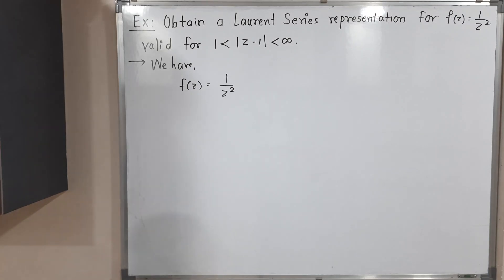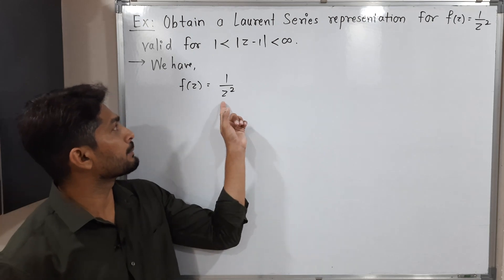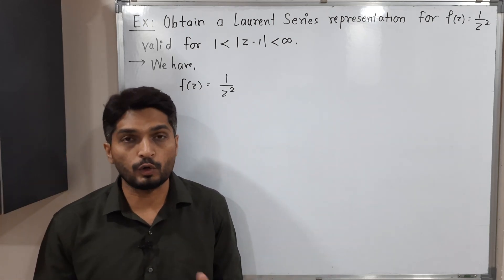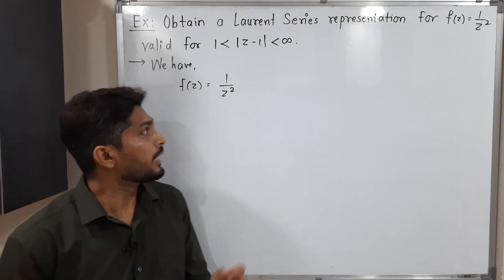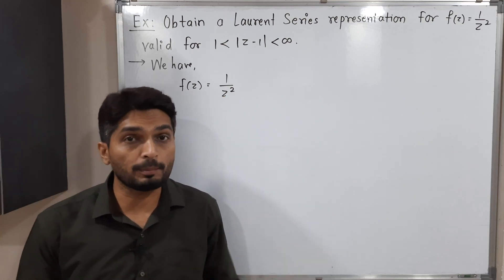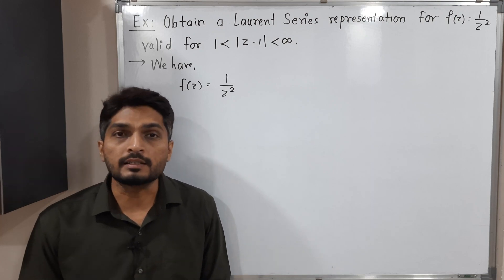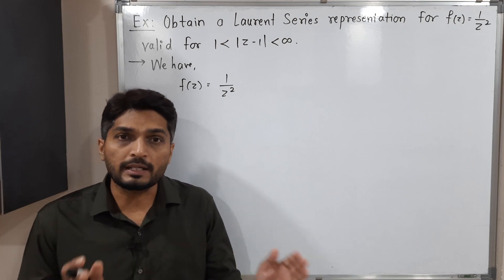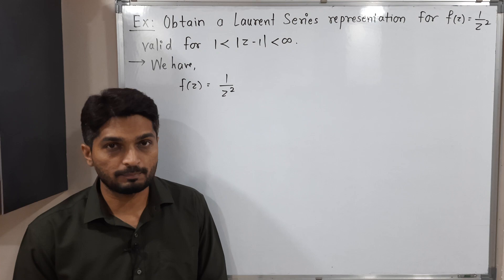In this video we are going to discuss this example: we have the function f(z) = 1/z², and we have to find its Laurent expansion for a given domain. Generally when we have any function with a product of two or more brackets in the denominator, we try to separate them. Fortunately, in this example we have a single term z² in the denominator, so no need to separate it, making it easy to find its Laurent series.